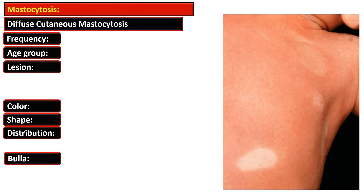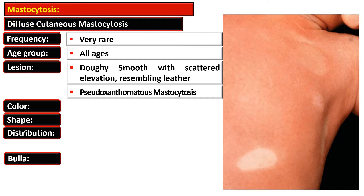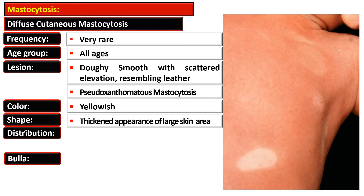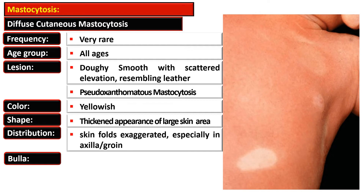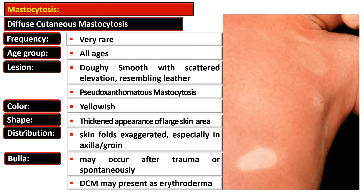Diffuse cutaneous mastocytosis is also very rare and affects all ages. The lesion is doughy and smooth with scattered elevations resembling leather, and is also named pseudoxanthomatous mastocytosis. The lesions are yellowish with a thickened appearance of large skin areas. Skin folds are exaggerated, especially in the axilla and groin, and bullae may occur after trauma or spontaneously. In this gross picture, the whitish area is normal skin while the rest is diffusely affected.